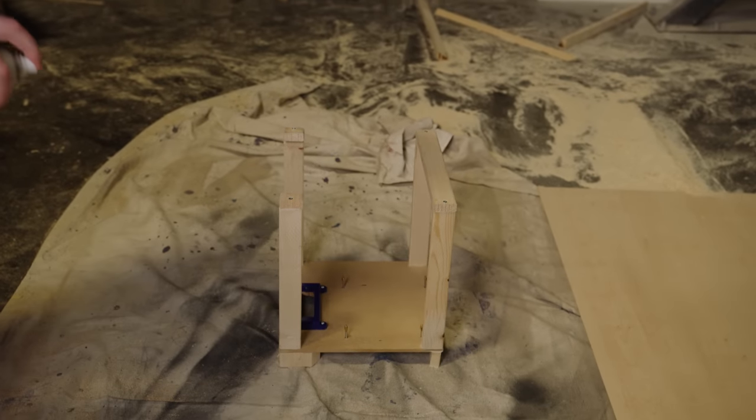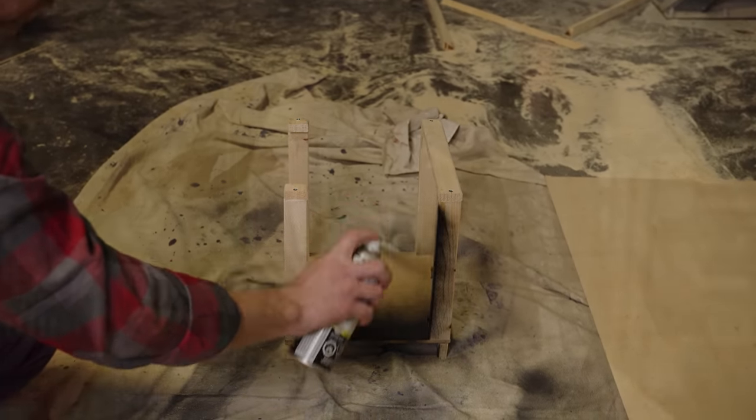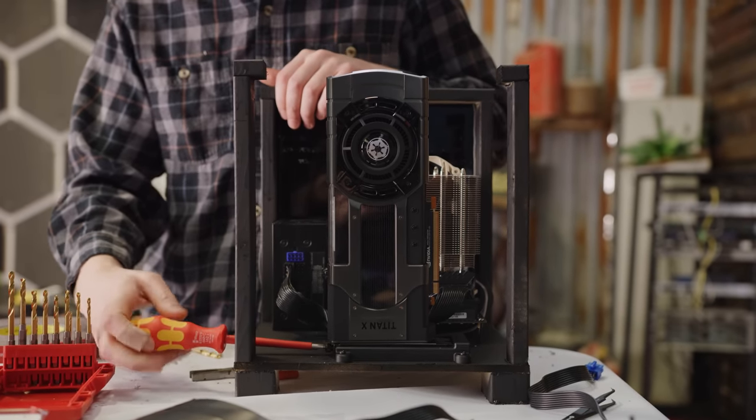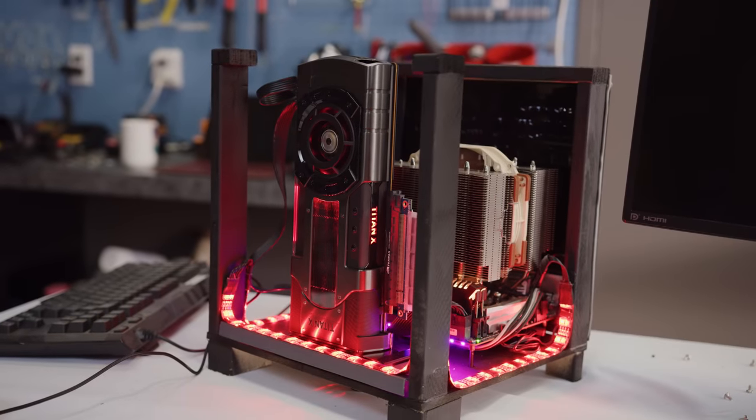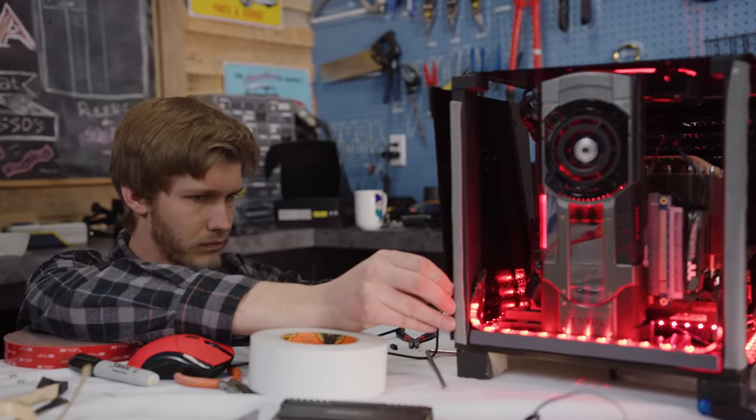Now we're not going to leave the frame showing exposed wood, so we also need to give the whole thing a quick coat of paint. Then once we've got all the hardware loaded into our Mark II frame, we can get to the most important part of any kick-ass case build - adding the RGB. With all the strips in place, it's time to close it up.